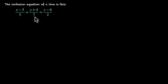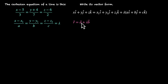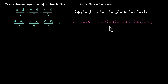Now let's practice going the other way: given the Cartesian equation of a line, find the vector form. From the Cartesian form we can read off the point and the direction ratios of the parallel vector. The point is (5, minus 4, 6), so A vector is 5i cap minus 4j cap plus 6k cap. The direction ratios give B vector as 3i cap plus 7j cap plus 2k cap. So the vector form is R equals A plus Lambda B with those values.